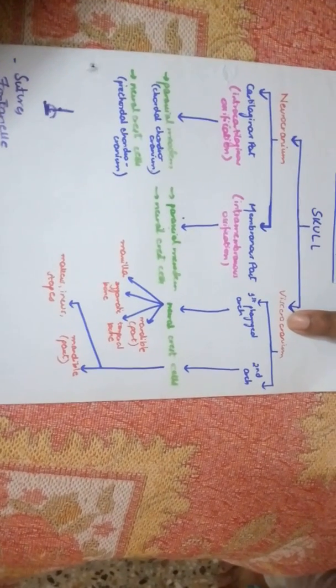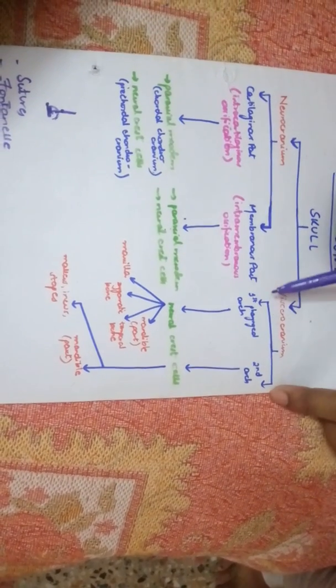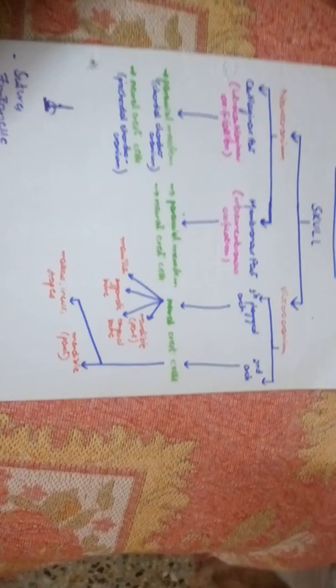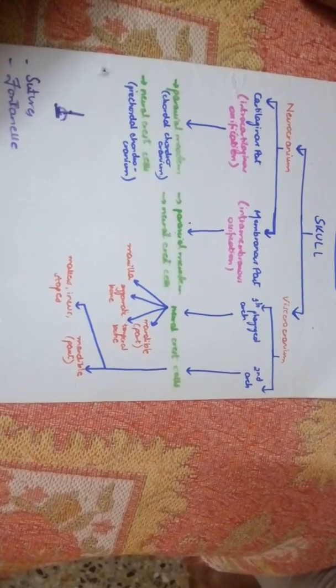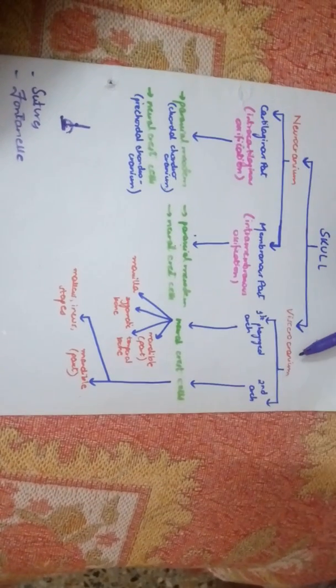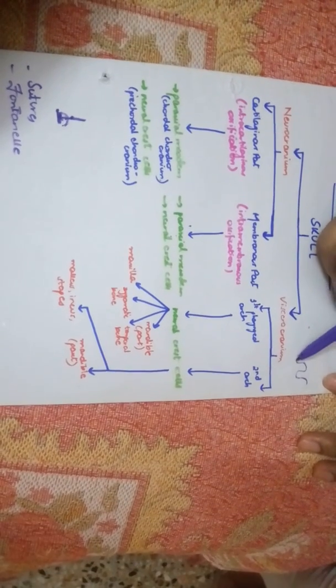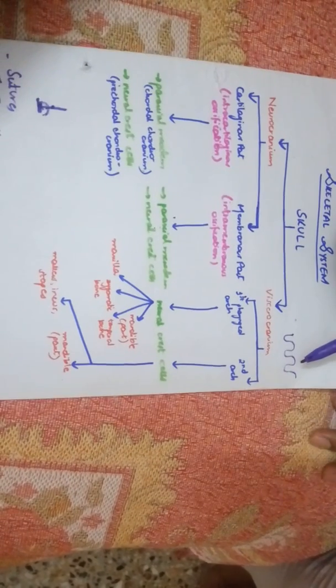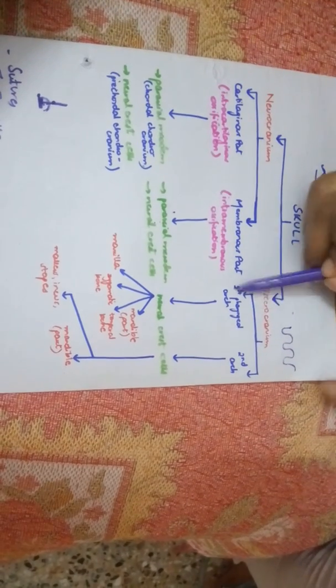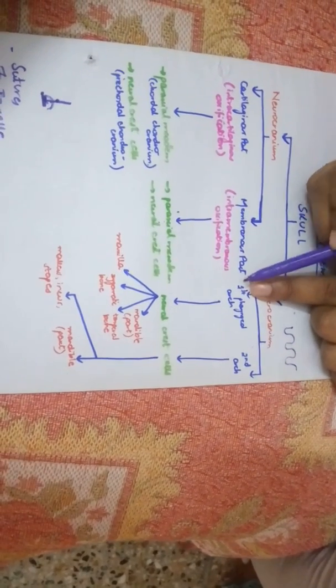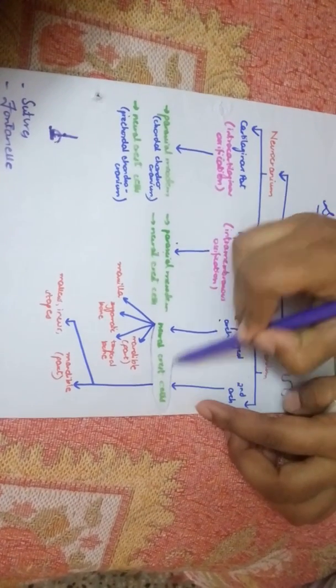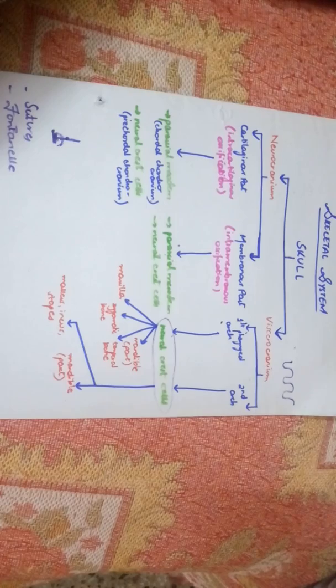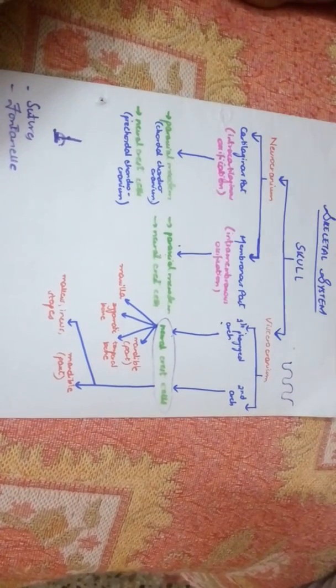Then comes the viscerocranium. The facial bones included in viscerocranium have two parts: one from the first pharyngeal arch and one from the second pharyngeal arch. Where our pharynx will form later, which connects to the oral cavity as their common pathway, during development in this area, bulgings appear in the mesoderm. These bulgings are called pharyngeal arches. Some say there are five, some say six pharyngeal arches. Both first and second pharyngeal arches will form from neural crest cells.